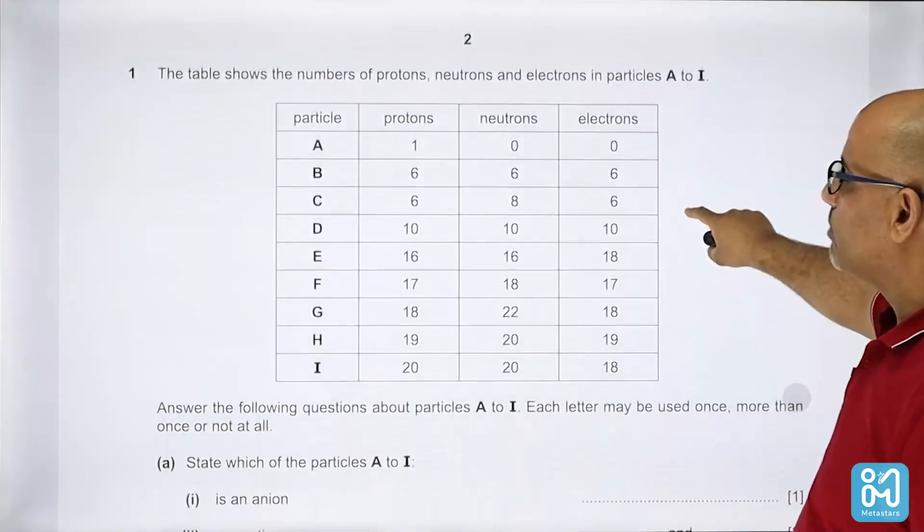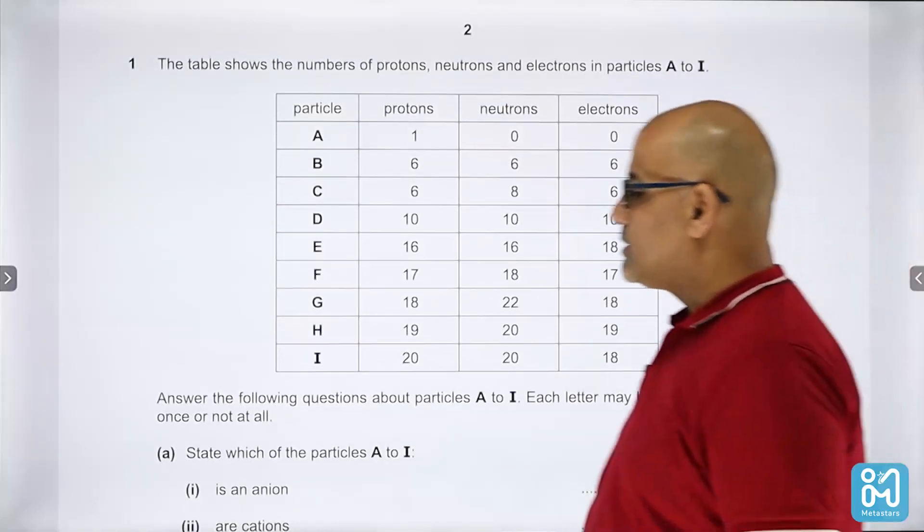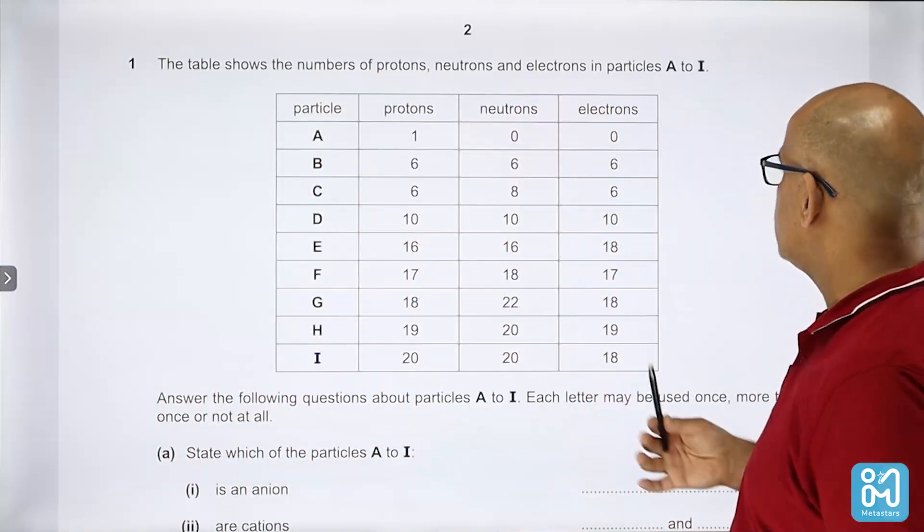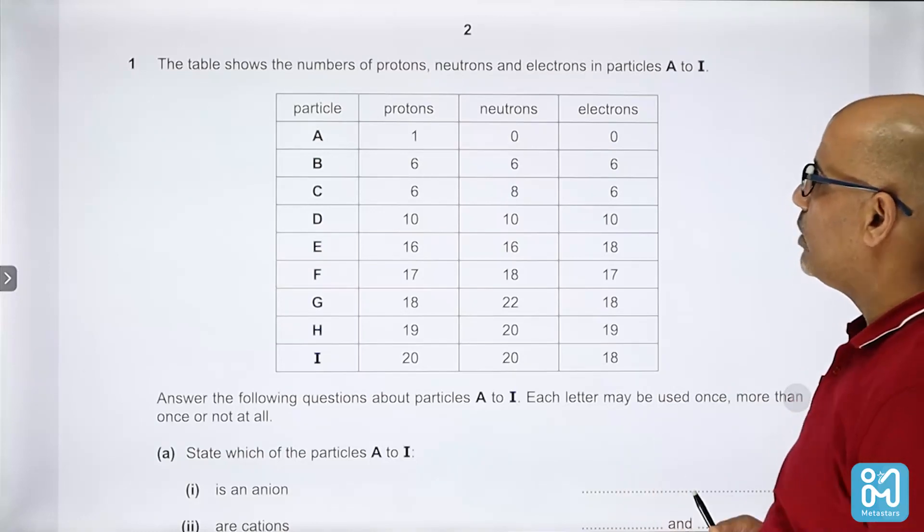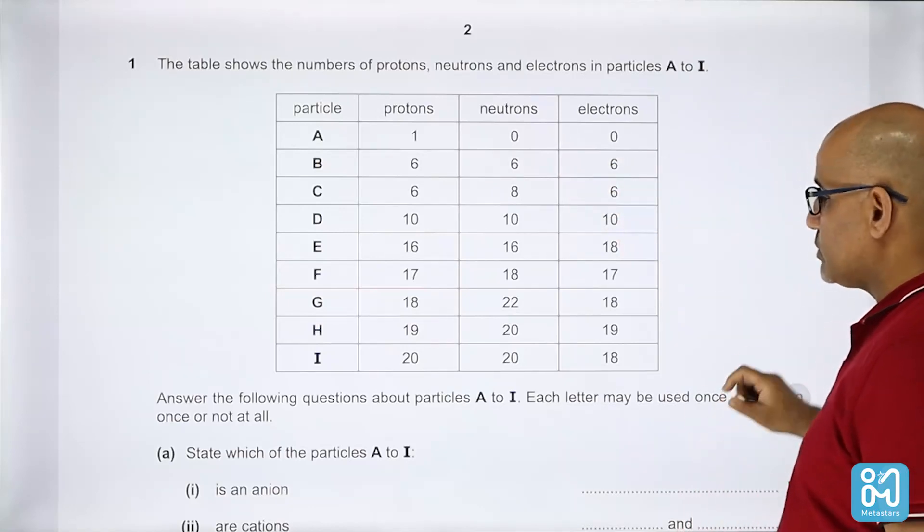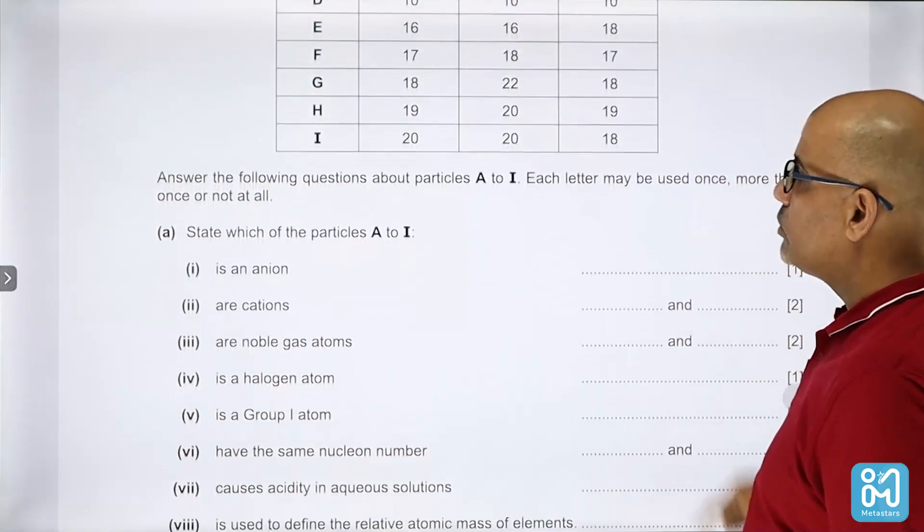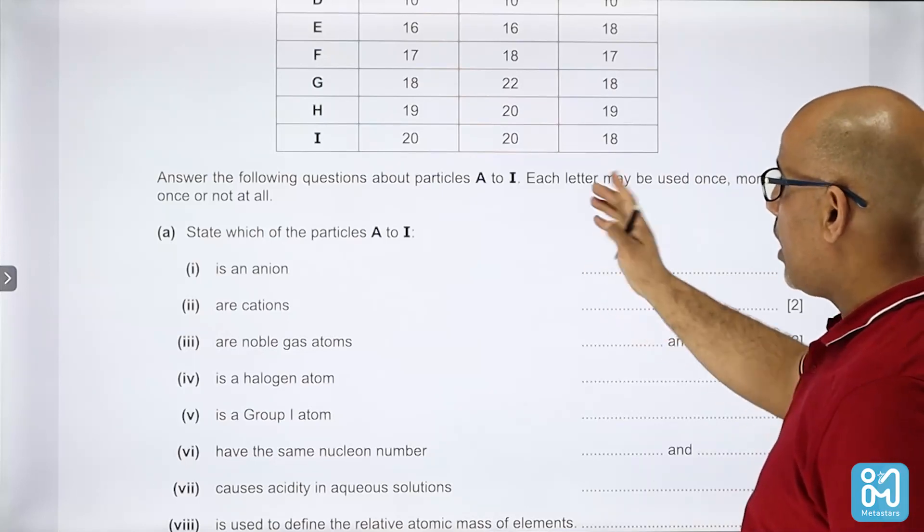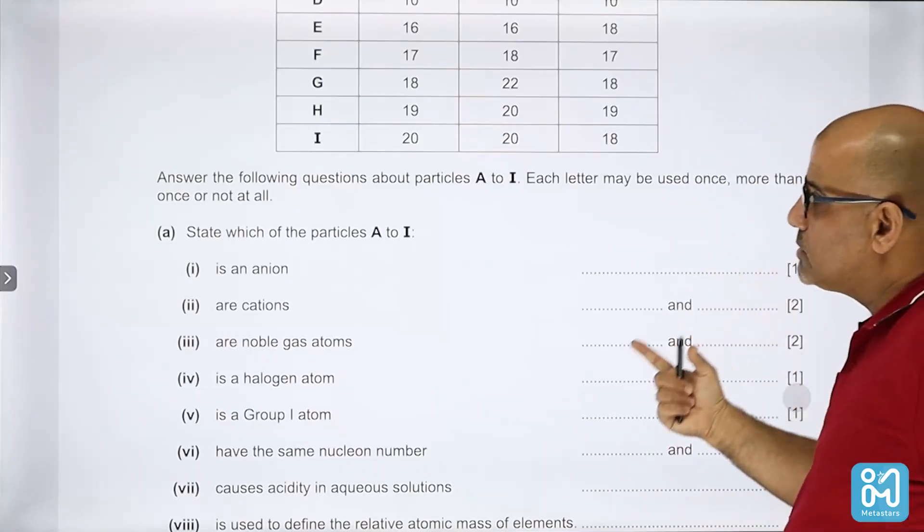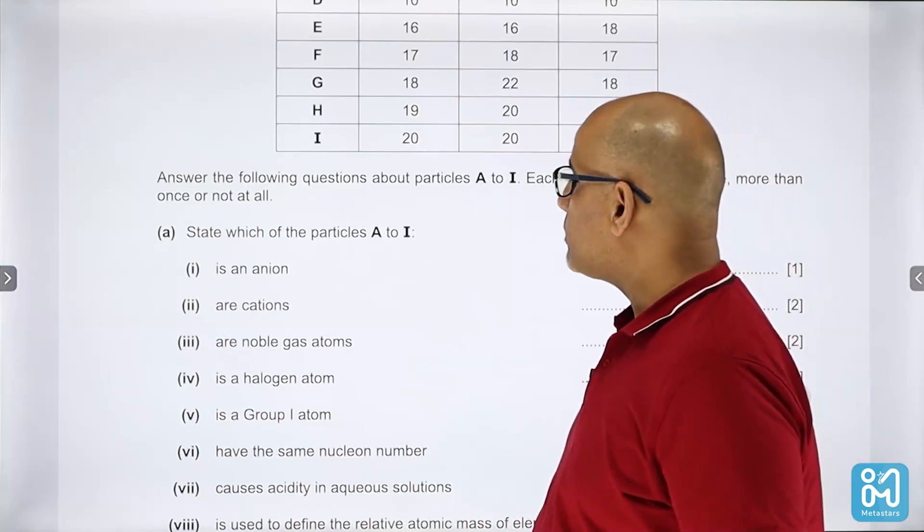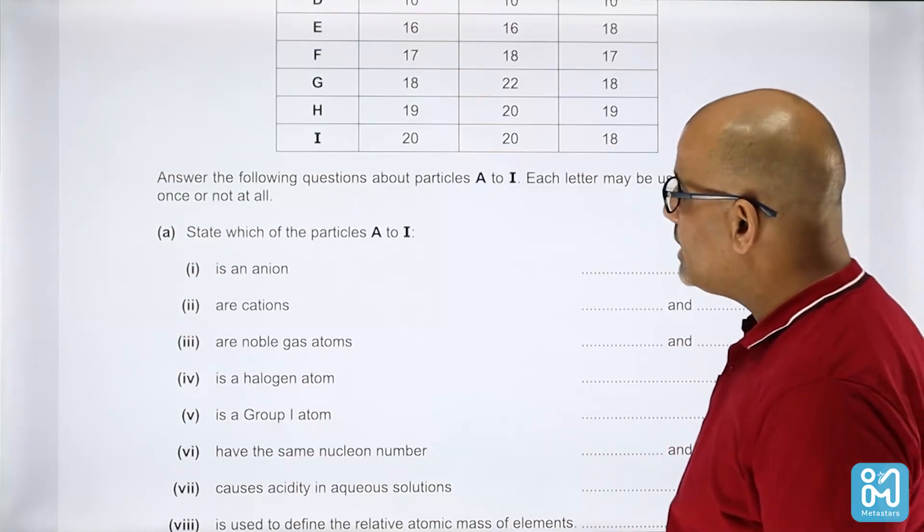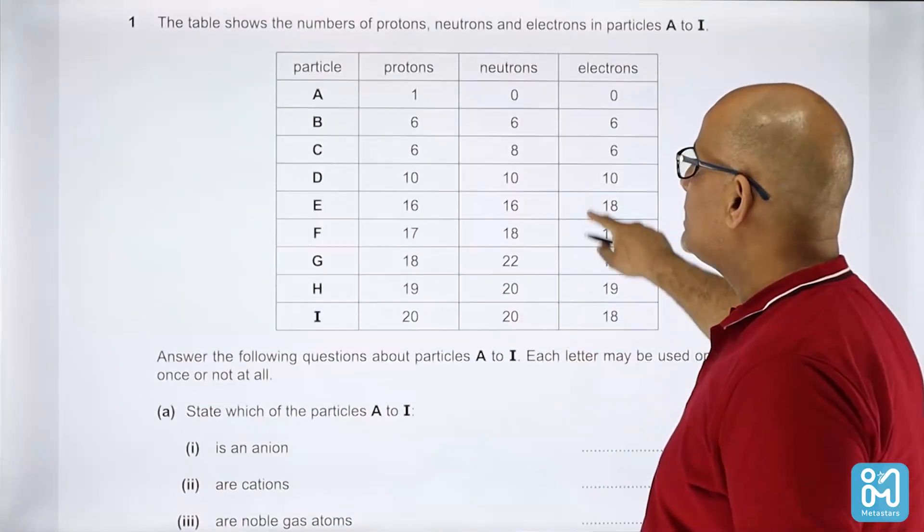In this paper, the first question talks about a table. This table shows the number of subparticles - protons, neutrons, and electrons in particles A to I. He's asking you to answer the following questions about particles A to I. Each letter may be used once, more than once, or not at all. First question, Part A: state which of the particles A to I is an anion. The anion is the negative ion.